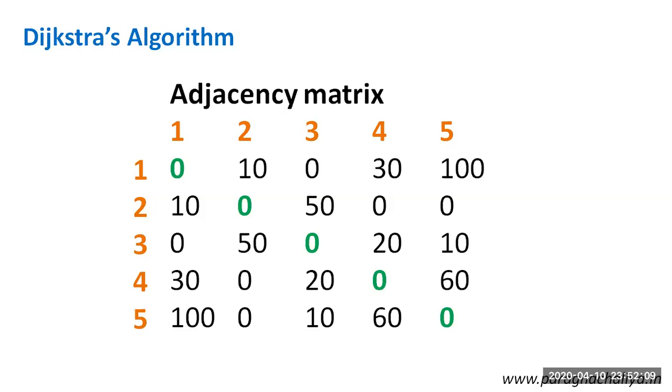This is possibility number 1. The second possibility will be if you can see the distance between node 1 and 3 is 0. That means there will not be any kind of edge between 1 and 3. That's why the distance is mentioned as 0. In the same way, you can see the distance between node 2 and node 4 is 0. That means there will not be any kind of edge between node 2 and node 4.